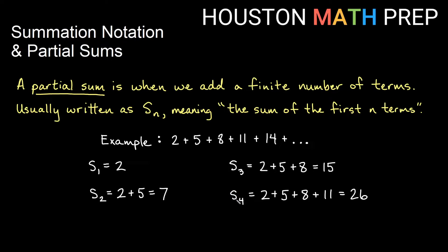S3 is the sum of the first three terms, so we would add 2 plus 5 plus 8, and that gives us 15. If we look at the sum of the first four terms, this partial sum is 2 plus 5 plus 8 plus 11, and that gives us 26.